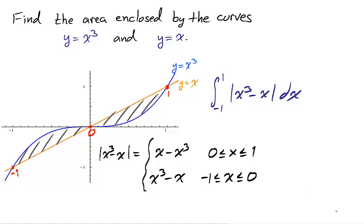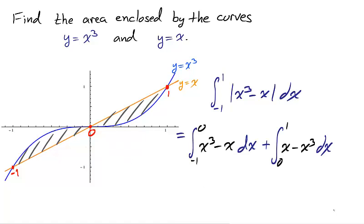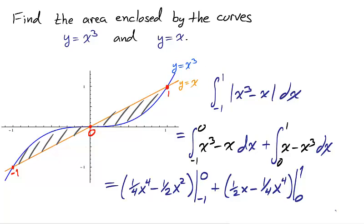The absolute value of x-cubed minus x can be written piecewise as x-cubed minus x on the interval from negative 1 to 0, and x minus x-cubed on the interval from 0 to 1. That is because x-cubed is above x on the interval negative 1 to 0, while x is above x-cubed on the interval 0 to 1. We split the integral's bounds at 0 and rewrite the absolute value accordingly. Both functions are polynomials, so they're continuous, and we can use the Fundamental Theorem of Calculus, Part 2, to solve the integrals by taking the difference of the antiderivative on the endpoints. We find that the shaded area is 1/2 square units.